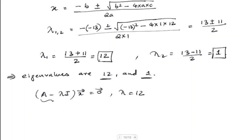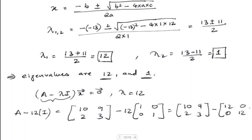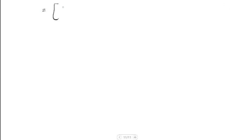First let us solve the part A minus lambda I where lambda is 12. We have matrix A which is [10, 9; 2, 3] minus 12 times the identity matrix [1, 0; 0, 1]. Subtracting: 12 times 1 is 12, 12 times 0 is 0, so the result is [10 minus 12, 9; 2, 3 minus 12] which gives us the matrix [minus 2, 9; 2, minus 9].